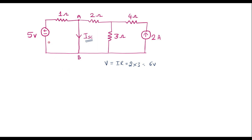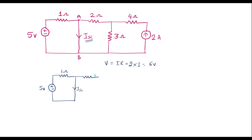Now let me simplify this circuit. Here we have a 5 volt voltage source, a 1 ohm resistor, and this is the shorted path. I will connect it as it is; that current is ISC. Here we have a 2 ohm resistor. I will convert the current source into a voltage source with magnitude 6 volts. This 3 ohm resistor will come in series with the 6 volt source. So it will be connected in series with the voltage source of 6 volts. Now let me simplify this circuit to find ISC.